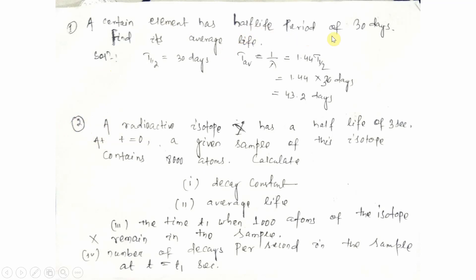T-half is given as 30 days. The average life tau = 1/lambda = 1.44 × T-half = 1.44 × 30 = 43.2 days. So the average life of the radioactive substance is 43.2 days.